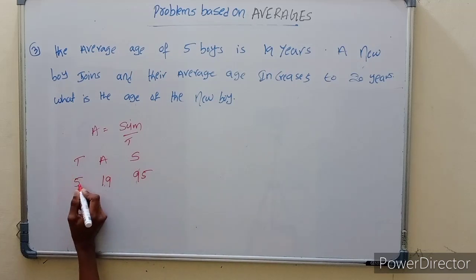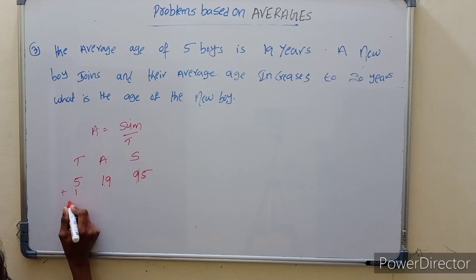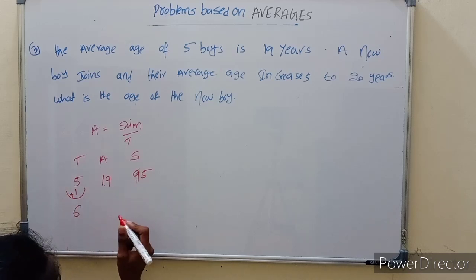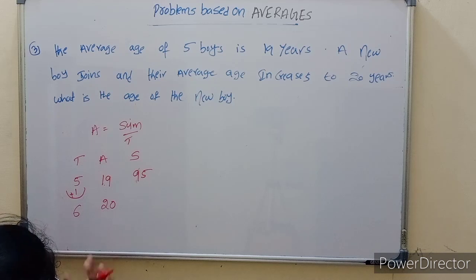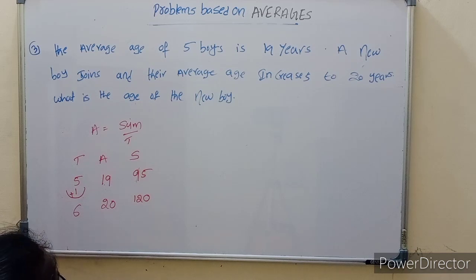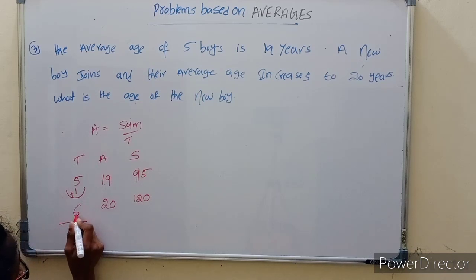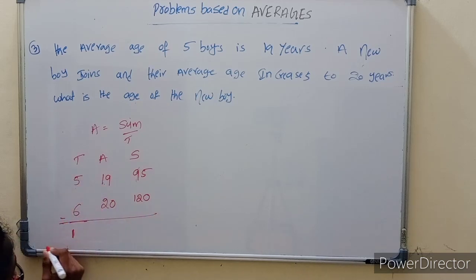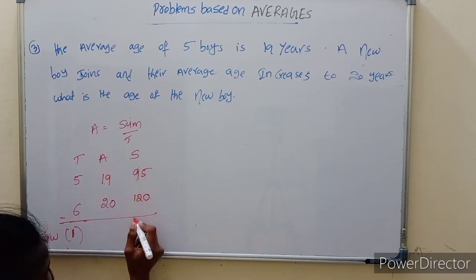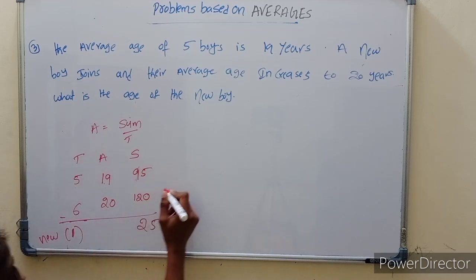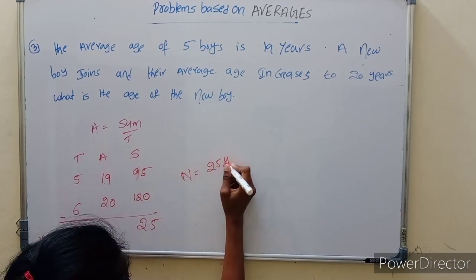When a new person joins, total becomes 6. The new average is 20 years. Sum for 6 persons equals average into total: 20 into 6 equals 120. So the age of the new person equals new sum minus old sum: 120 minus 95 equals 25 years.